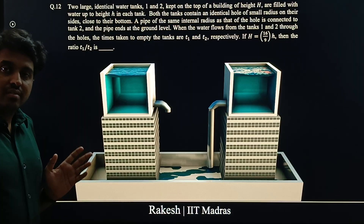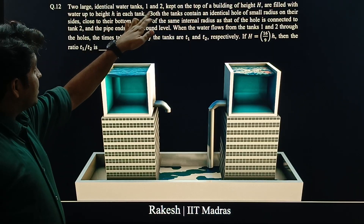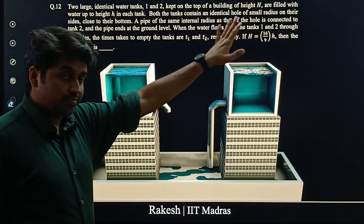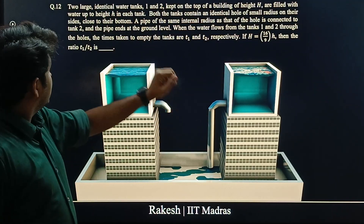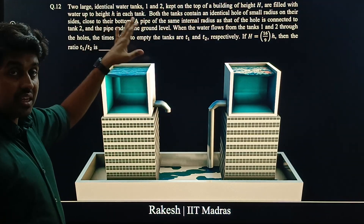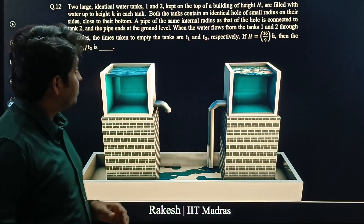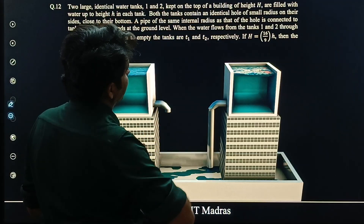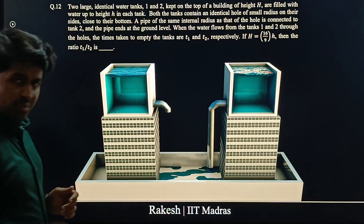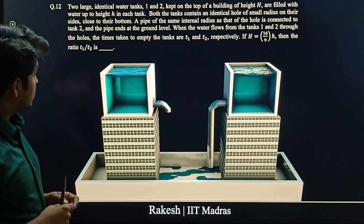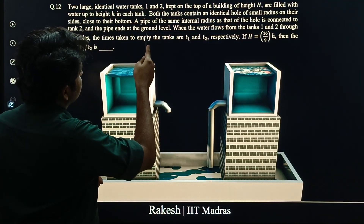This is a question from JEE Advanced 2024. Two large identical water tanks are kept on top of a building of height H. Both are filled up to height h. Both tanks contain an identical hole of small radius in their sides. At the base of tank 2, a pipe of the same internal radius as the hole is connected, and the pipe ends at ground level.